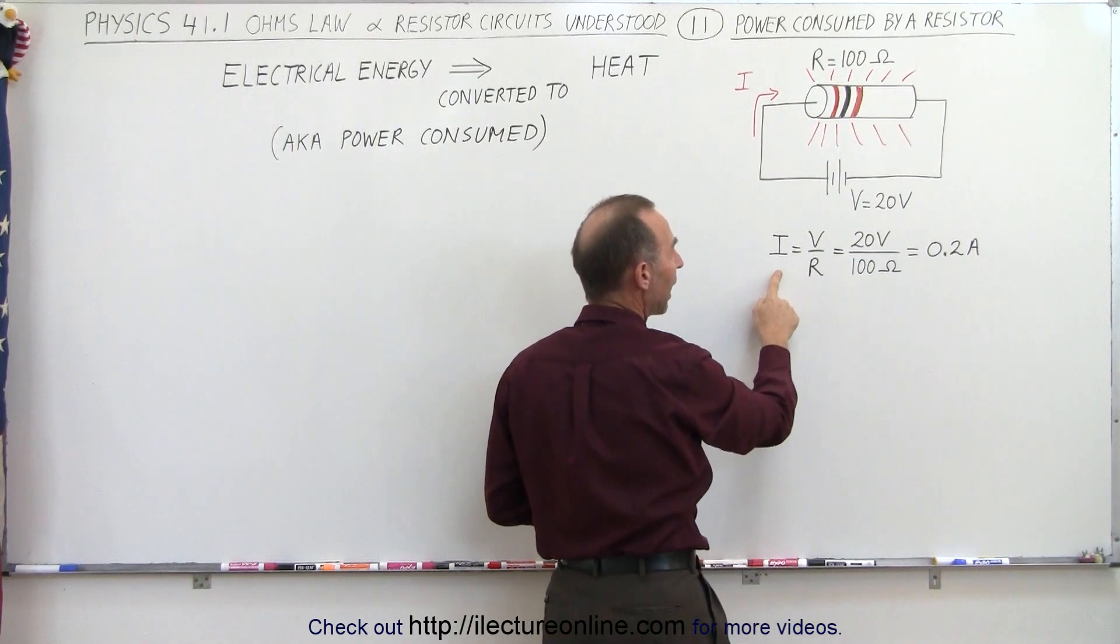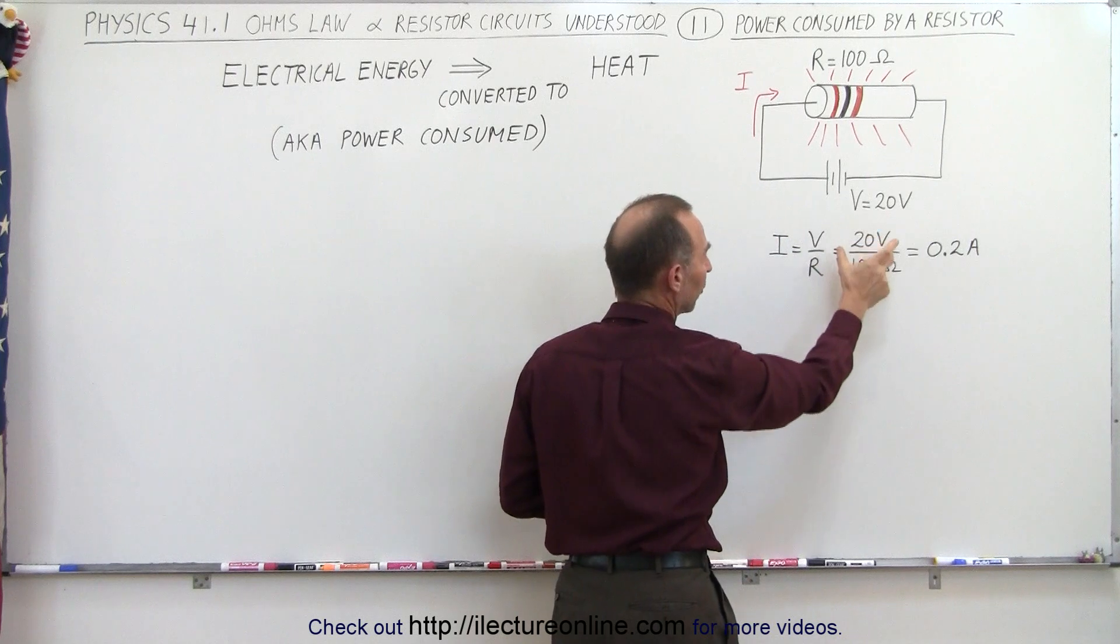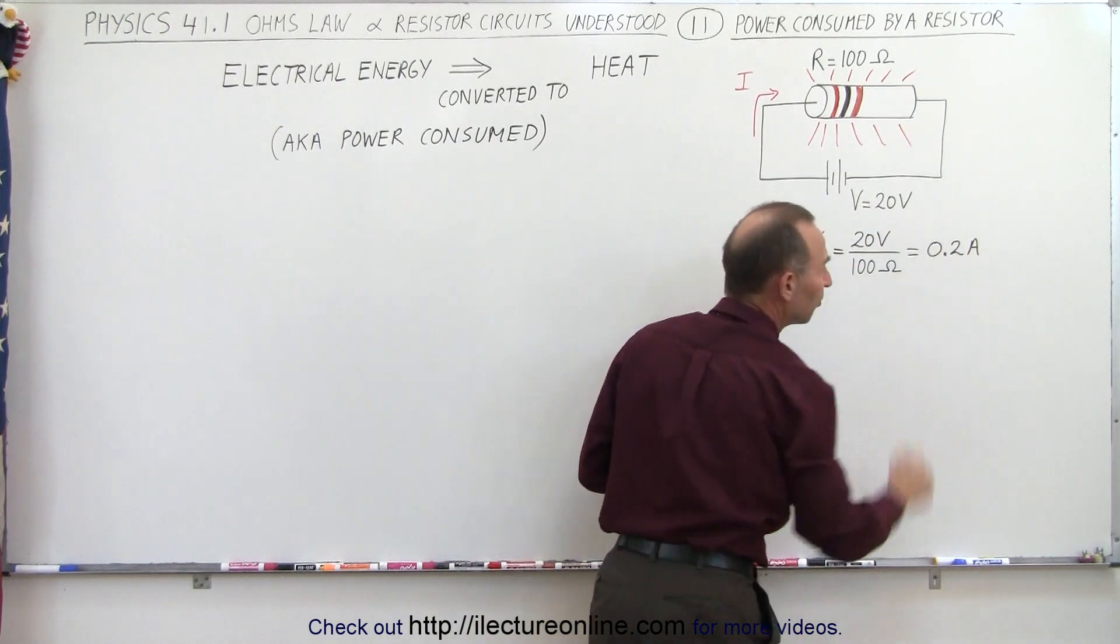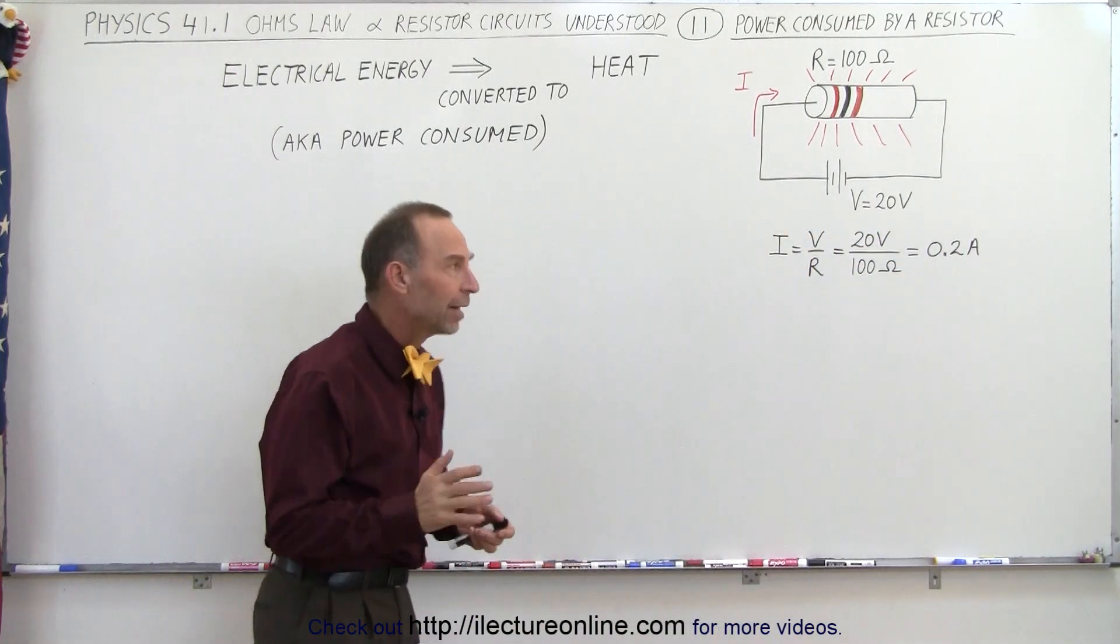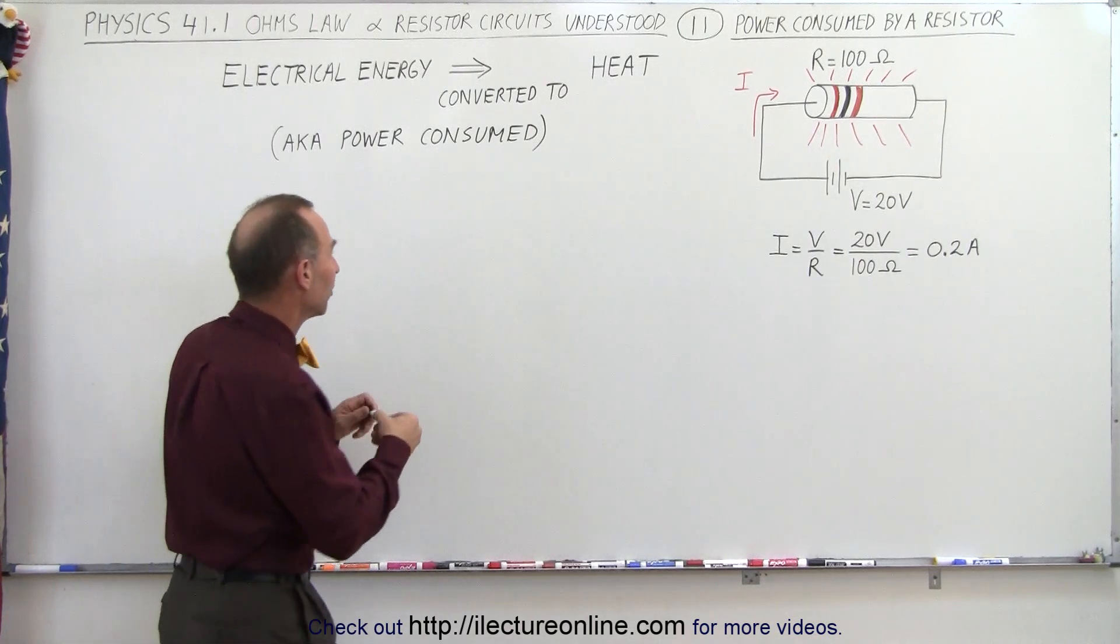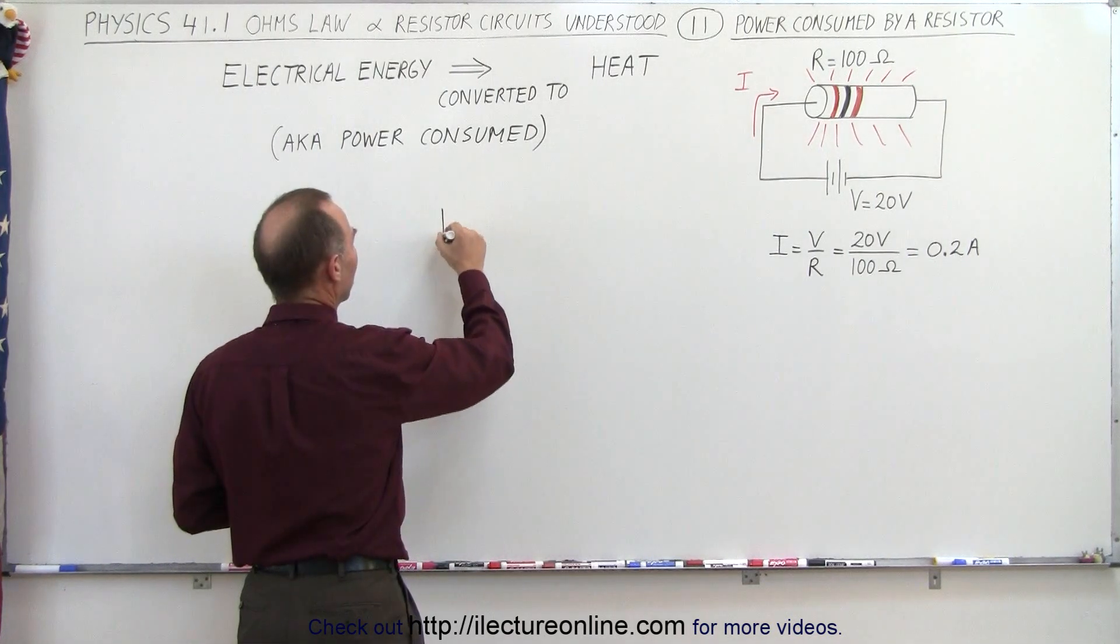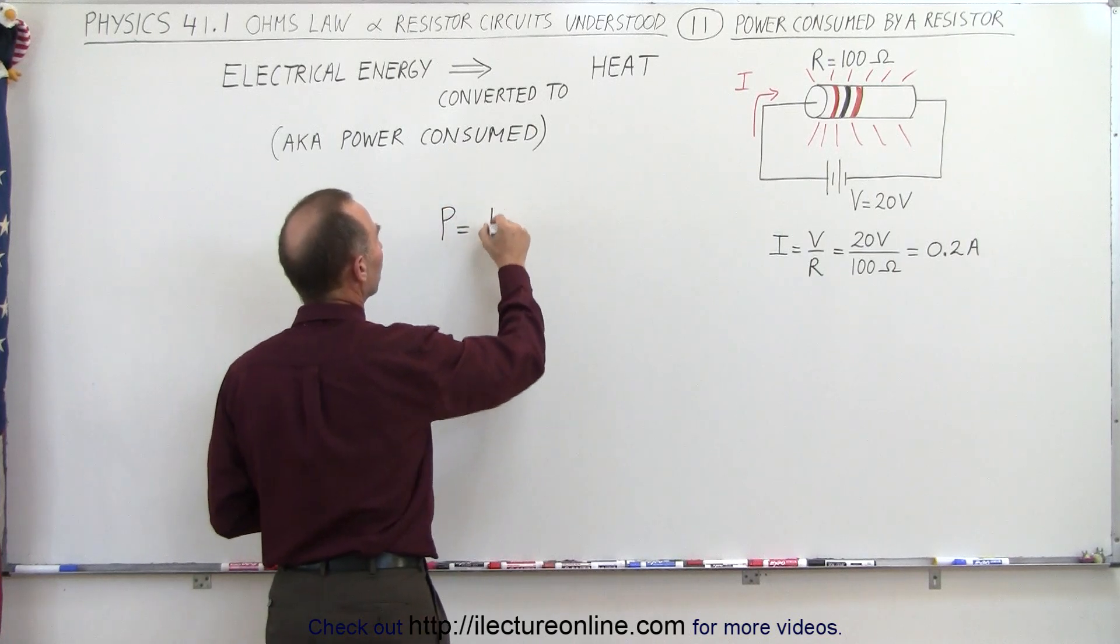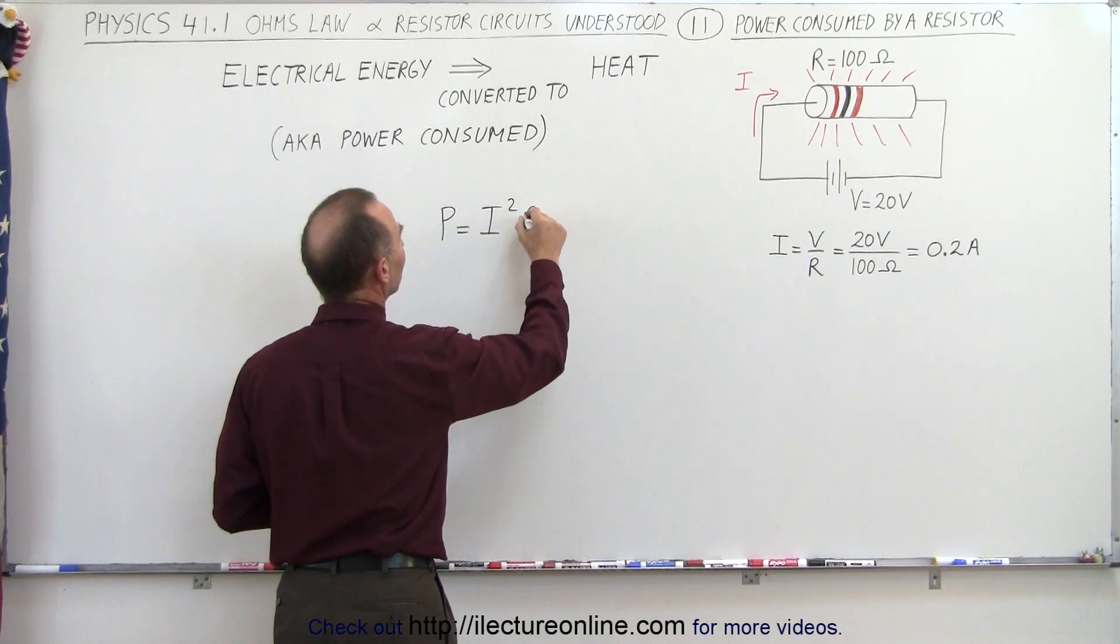Using Ohm's law, I is V over R, which is 20 volts divided by 100 Ohms, which is 0.2 Amps. Now the equation that helps us calculate the power consumed by a resistor is as follows. Power is equal to the current squared times the resistance.